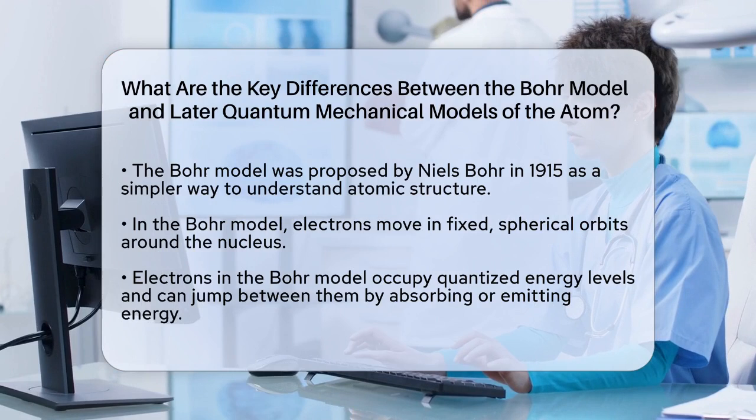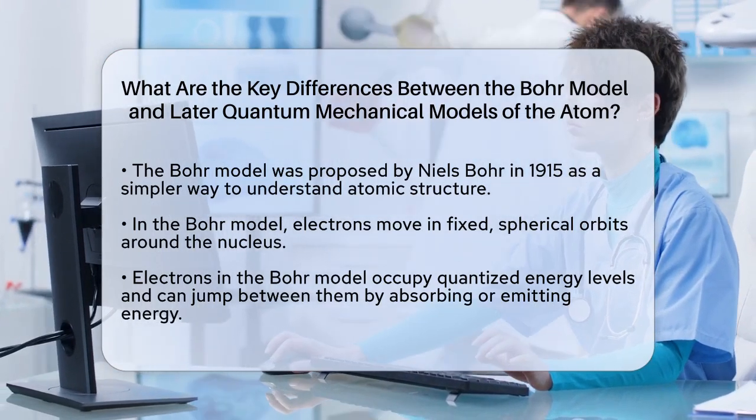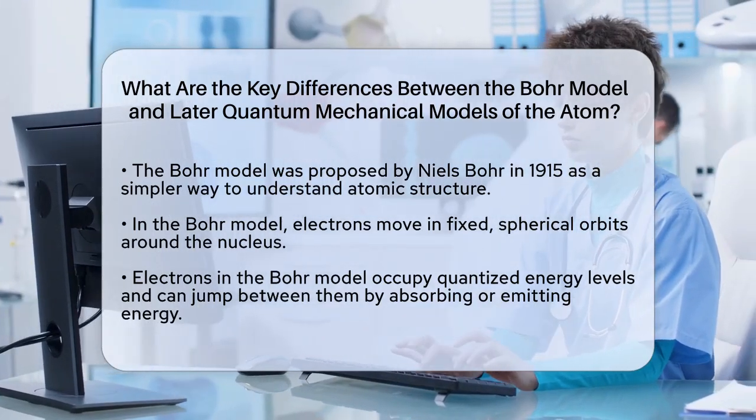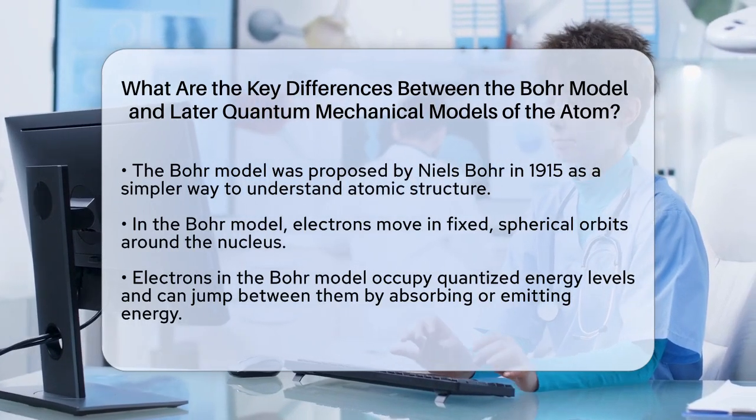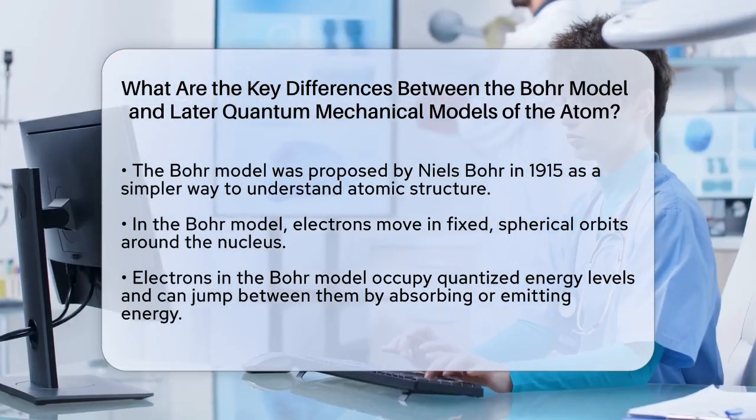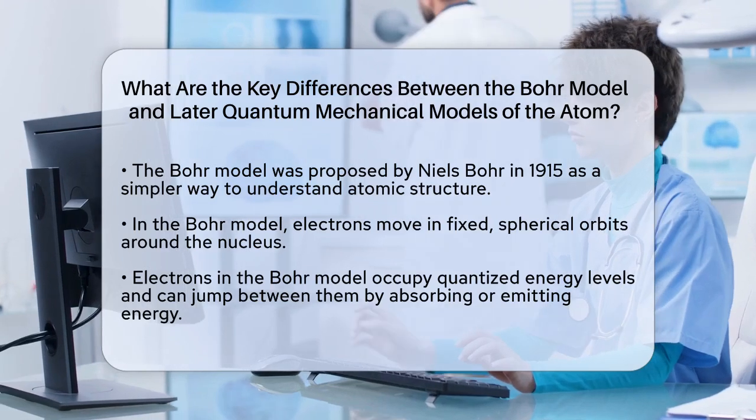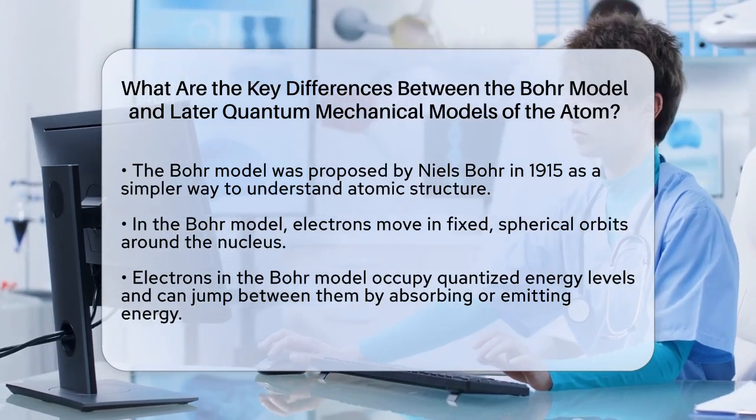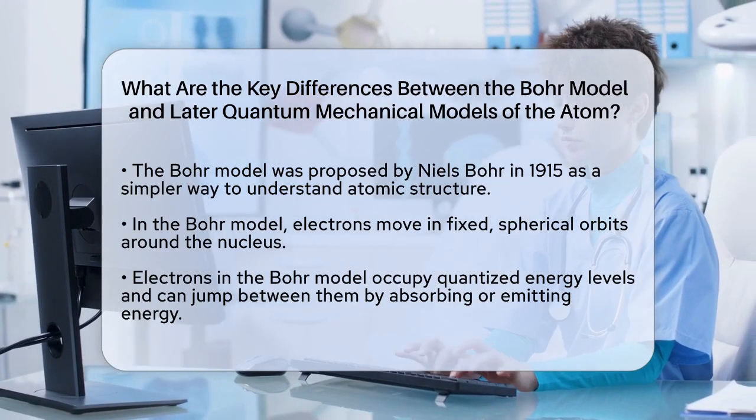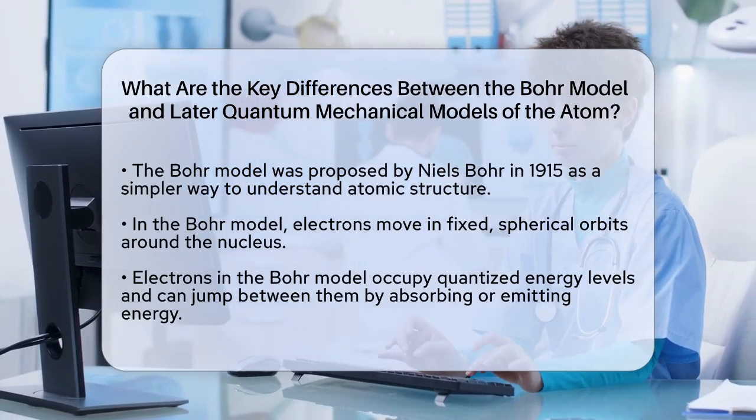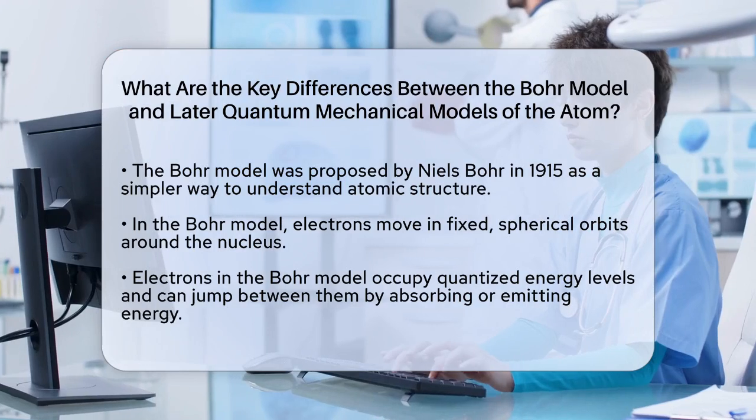To start, the Bohr model, proposed by Niels Bohr in 1915, is a simpler way to understand the atom. In this model, electrons are treated as particles that move in fixed, spherical orbits around the nucleus. These orbits are quantized, meaning electrons can only occupy specific energy levels, and they can jump from one level to another by absorbing or emitting energy.